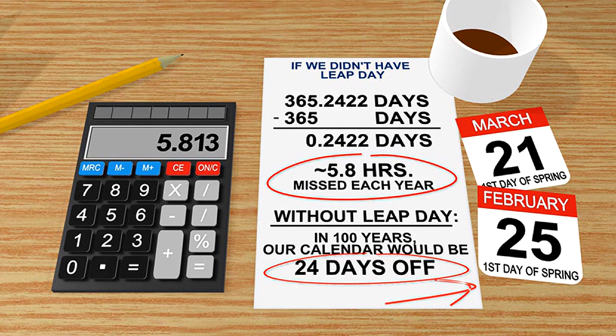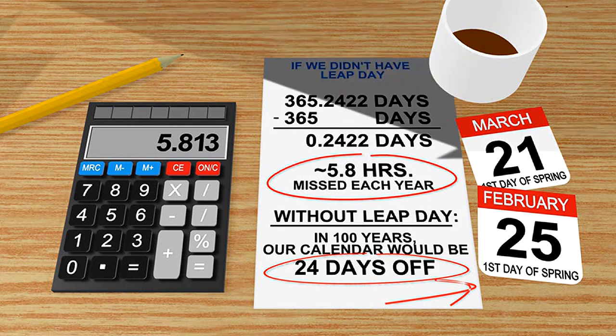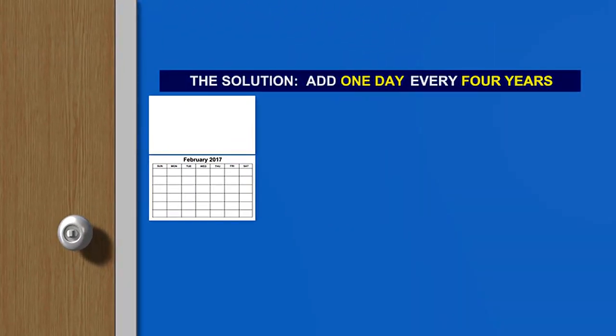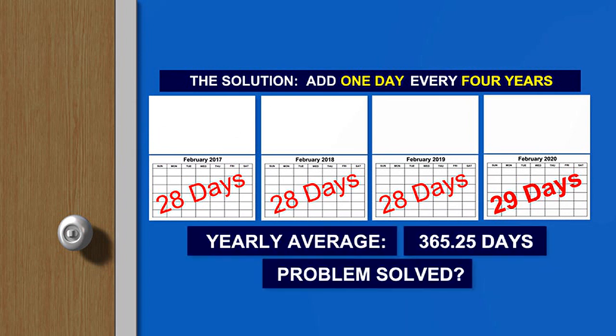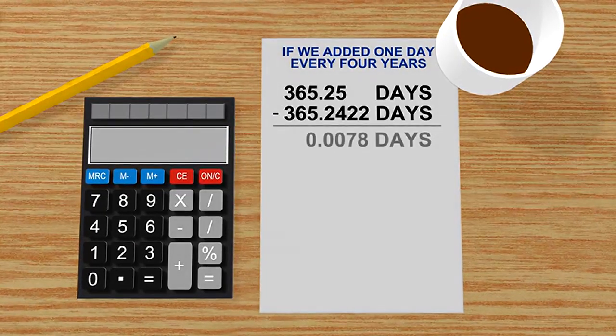So what's our solution? We all know this: we add one day to the calendar every four years. That's our Leap Day, February 29th. So that puts the new yearly average at 365.25 days. Does that fix the problem? Not quite — it's certainly a lot closer.